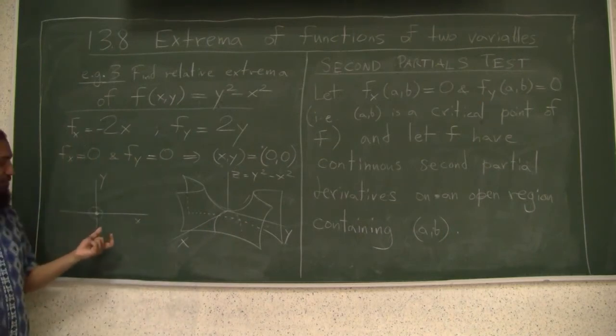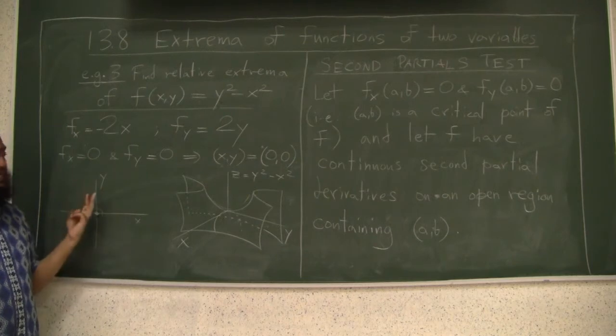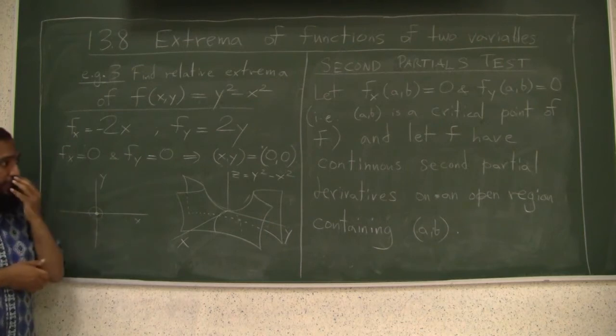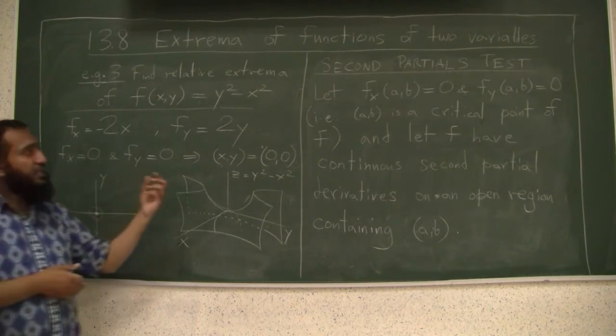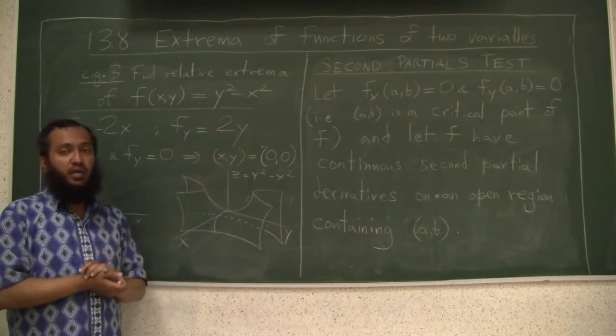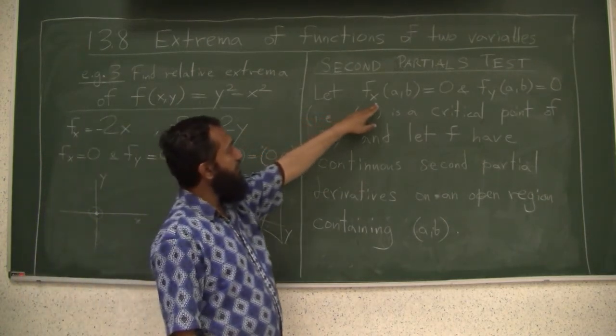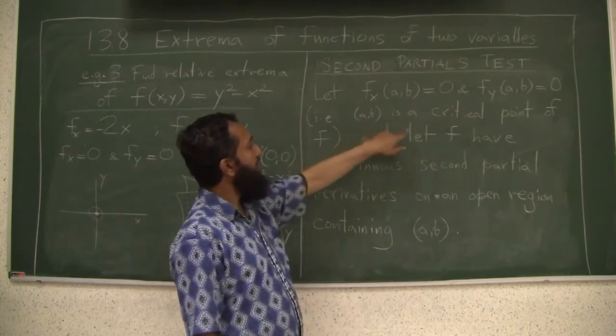Now, one thing you have been noticing that in these three examples we have done, we have had to do some careful algebra to see is it a min, max, neither. There is something called a second partial test that will help us sometimes. It says that f of x, let the partial derivatives be 0, meaning it's a critical point.